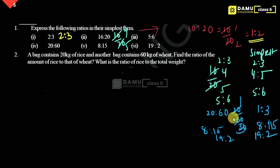So finally, the simplest forms are: 2:3 stays as 2:3, 16:20 becomes 4:5, 5:6 stays as 5:6, 20:60 becomes 1:3, 8:15 stays as 8:15, and 19:2 stays as 19:2.